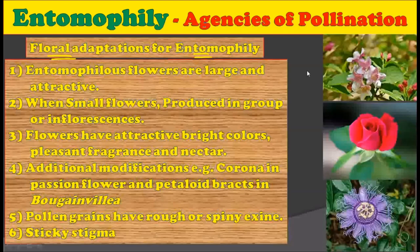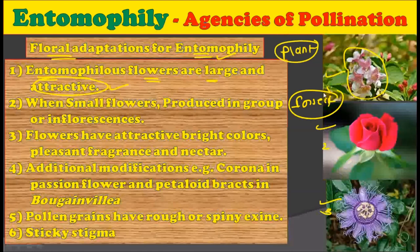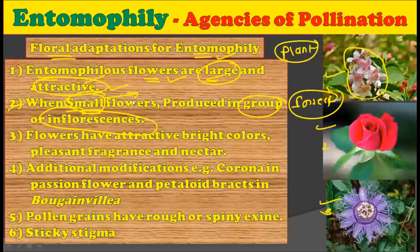Now let's consider the floral adaptations for entomophily — how flowers are modified in order to achieve insect pollination. Certain features developed by plant flowers attract insects for pollination. The first adaptation is that entomophilous flowers are large and attractive. They have large size and are visually attractive, which is why insects are easily attracted. Sometimes flowers may be small, and if so, they are produced in a group or inflorescence.